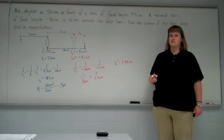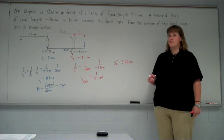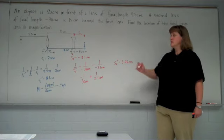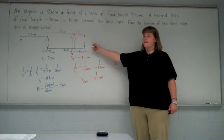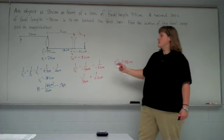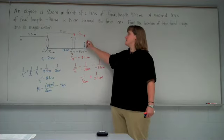Answer's positive. That means the image is on the backside of the lens. Over here. 3.46 centimeters away. So it's only a little bit further away.